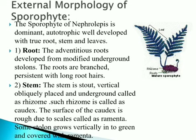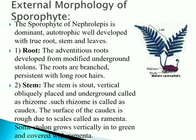The stem is stout, vertical, obliquely pressed, and underground, called a rhizome. Such a rhizome is also called a caudex. The surface of the caudex is rough due to scales called ramenta. Some stolons grow vertically and are also covered with ramenta, making the structure somewhat rough.